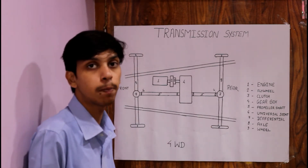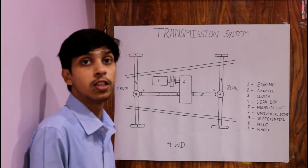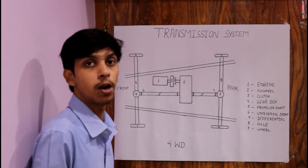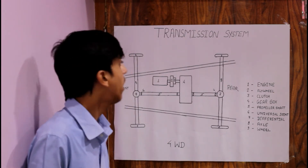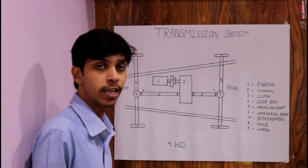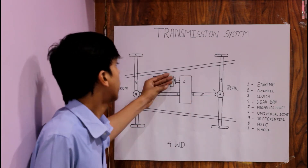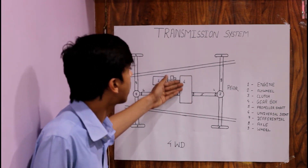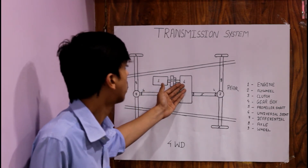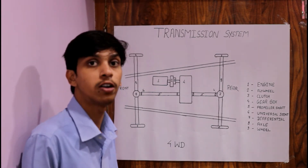Now we will discuss the working of the transmission system. First, the engine is the power plant through which power is generated and then transmitted to the flywheel, which stores the energy and releases it as per the requirement. After this, the clutch is situated. When the power of the engine is transferred to the gearbox, the clutch is engaged or disengaged as per the requirement.